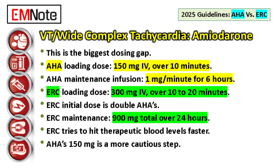The ERC starts much more aggressively. Their loading dose is 300 milligrams intravenous amiodarone given over 10 to 20 minutes — double the initial dose. The maintenance infusion is defined differently too: a total of 900 milligrams given over the next 24 hours. Doubling the load speeds up the antiarrhythmic effect in potentially unstable rhythms, but that faster saturation requires careful monitoring — watch blood pressure. The AHA's 150 milligrams is a more cautious step, letting you monitor tolerance before the full dose is in. Knowing that 300 milligram load is standard ERC practice means dealing with a very high initial concentration compared to the usual 150 under AHA guidelines.